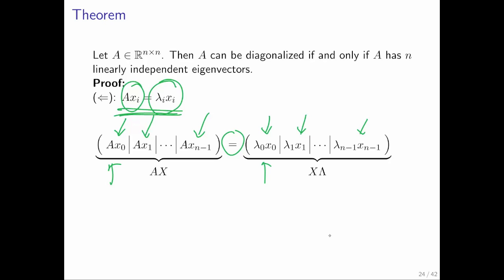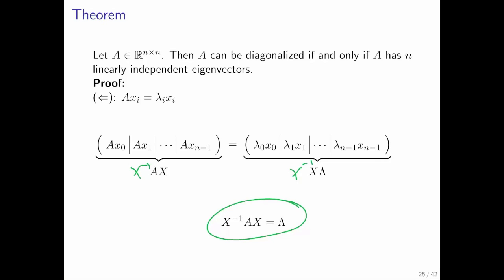And then we remember that you can just take the A outside and then collect all of the columns as the columns of matrix X. And you can do the same thing here. You realize that this is just the matrix X multiplied on the right by a diagonal matrix. And then if you multiply both sides by X inverse, then you get exactly what we were after.